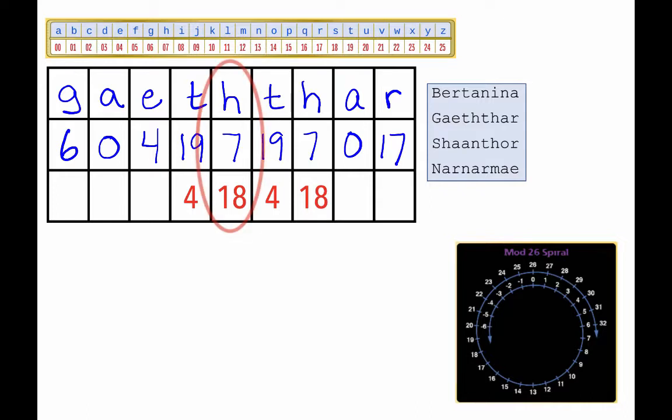For example, look at the H. It's the number 7, and its encryption is 18. What can you add to 7 to get 18? And the answer, of course, is 11.